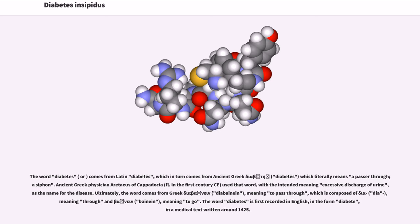The word diabetes comes from Latin diabetes, which in turn comes from ancient Greek which literally means a passer through, a siphon. Ancient Greek physician Aretaeus of Cappadocia used that word, with the intended meaning excessive discharge of urine, as the name for the disease. Ultimately, the word comes from Greek meaning to pass through, which is composed of meaning through and meaning to go. The word diabetes is first recorded in English, in the form diabete, in a medical text written around 1425.